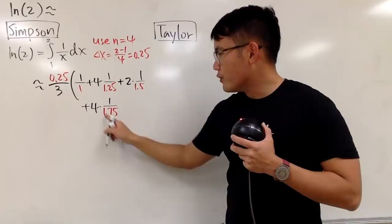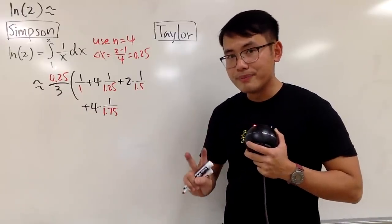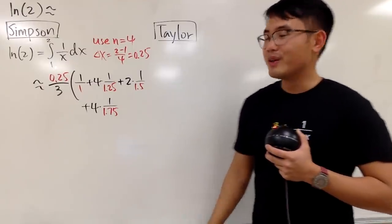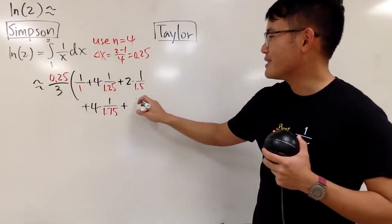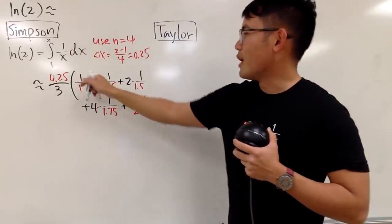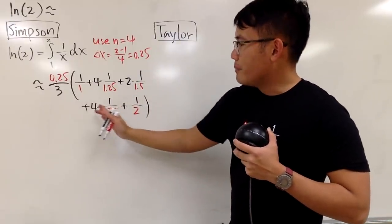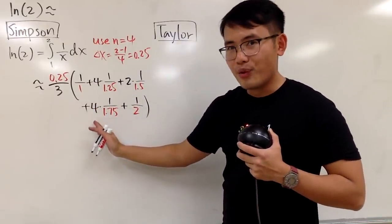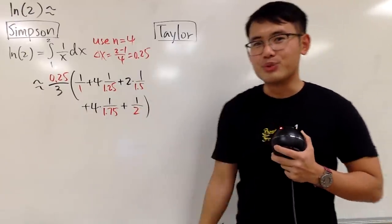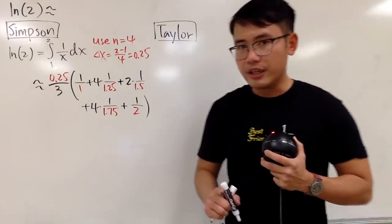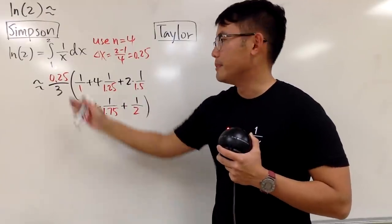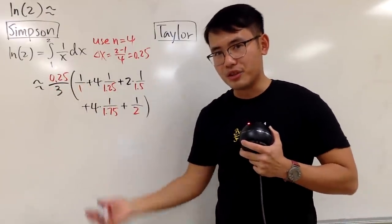And lastly, adding 0.25 again gives 2, which is exactly the last x value. So the last term is 1 times the function value at x=2. The pattern is: 1, 4, 2, 4, 2, 4 — the second-to-last coefficient must be 4, and the very last coefficient is 1. That's how you remember Simpson's rule. There's just basic arithmetic — decimals, fractions, and addition — so you can calculate this by hand.